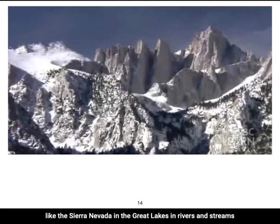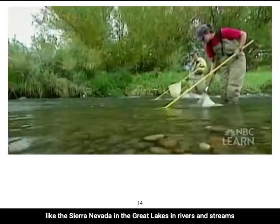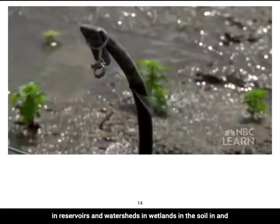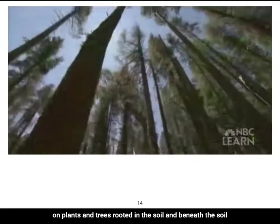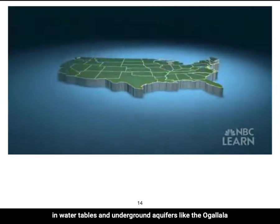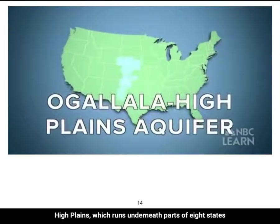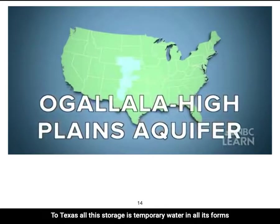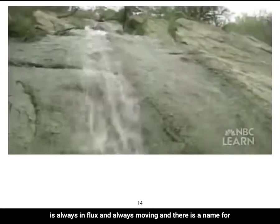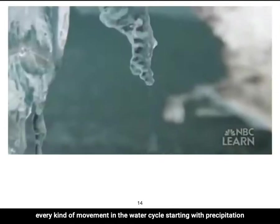In the Great Lakes, in rivers and streams, in reservoirs and watersheds, in wetlands, in the soil, in and on plants and trees rooted in the soil, and beneath the soil — in water tables and underground aquifers like the Ogallala High Plains, which runs underneath parts of eight states from South Dakota to Texas. All this storage is temporary. Water in all its forms is always in flux and always moving, and there is a name for every kind of movement in the water cycle.